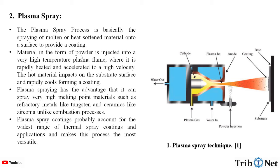Material in the form of powder is injected into a very high temperature plasma flame where it is rapidly heated and accelerated to a high velocity. The hot material impacts on the substrate surface and rapidly cools forming a coating. Plasma spraying has the advantage that it can spray very high melting point materials such as refractory metals like tungsten and ceramics like zirconia, unlike combustion processes. Plasma spray coatings probably account for the widest range of thermal spray coatings and applications, making this process the most versatile.